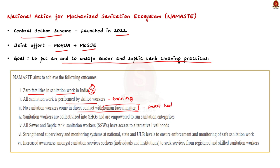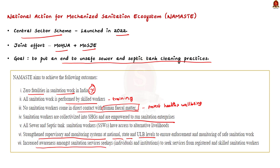Fourthly, to empower sanitation workers. Under the scheme, they will be organized into self-help groups and given the power to run sanitation enterprises. This empowerment will enable them to have a say in their work and livelihood. Fifthly, to strengthen supervisory and monitoring systems — the scheme will establish stronger systems for supervision and monitoring of safe sanitation work at national, state and urban local body levels, helping to enforce safety standards efficiently. Finally, the scheme aims to raise awareness among individuals and institutions who require sanitation services, encouraging them to seek services from registered and skilled sanitation workers.